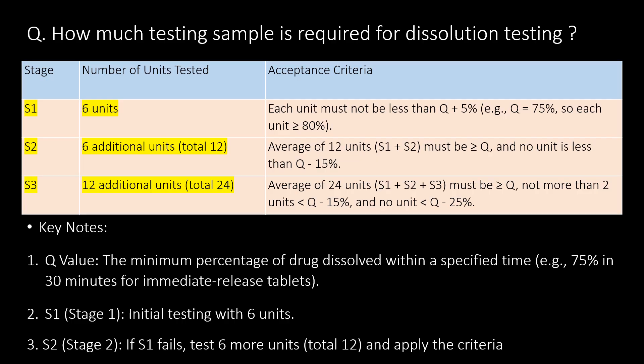A very important question: how many testing samples are required for dissolution testing? You can refer to the bullet table for different stages, number of units tested, and their acceptance criteria. At the initial S1 stage, 6 units or tablets are used. If they fail at S1, we go to S2 where 6 additional units are added, making 12 total. If samples still fail at S2, we proceed to S3, where 12 additional units are added, making 24 units total.